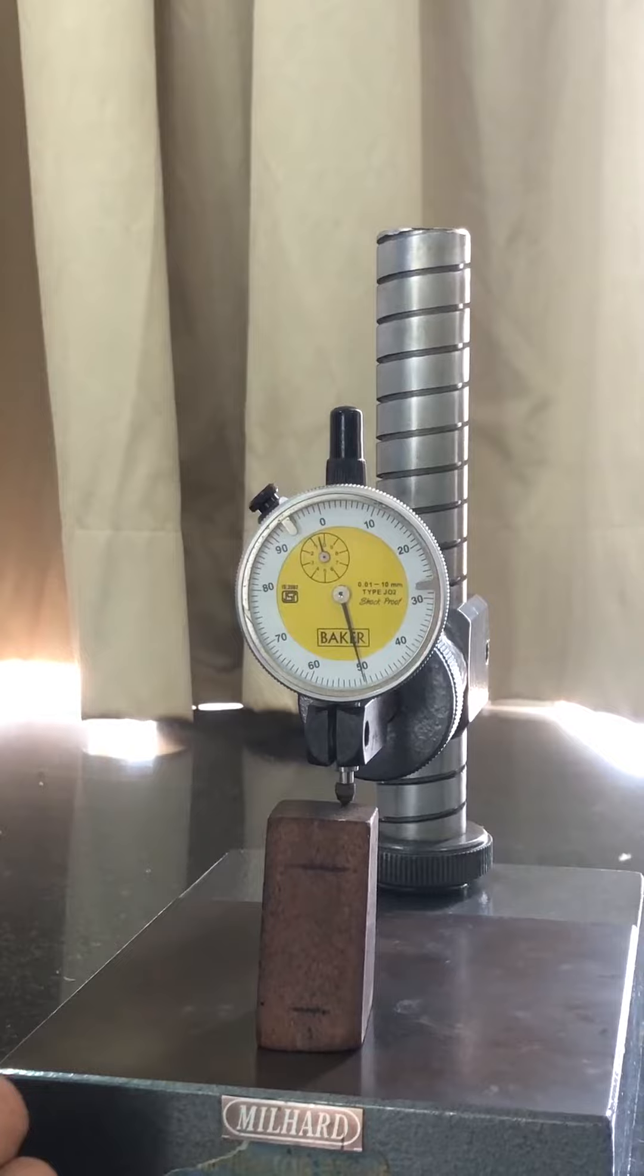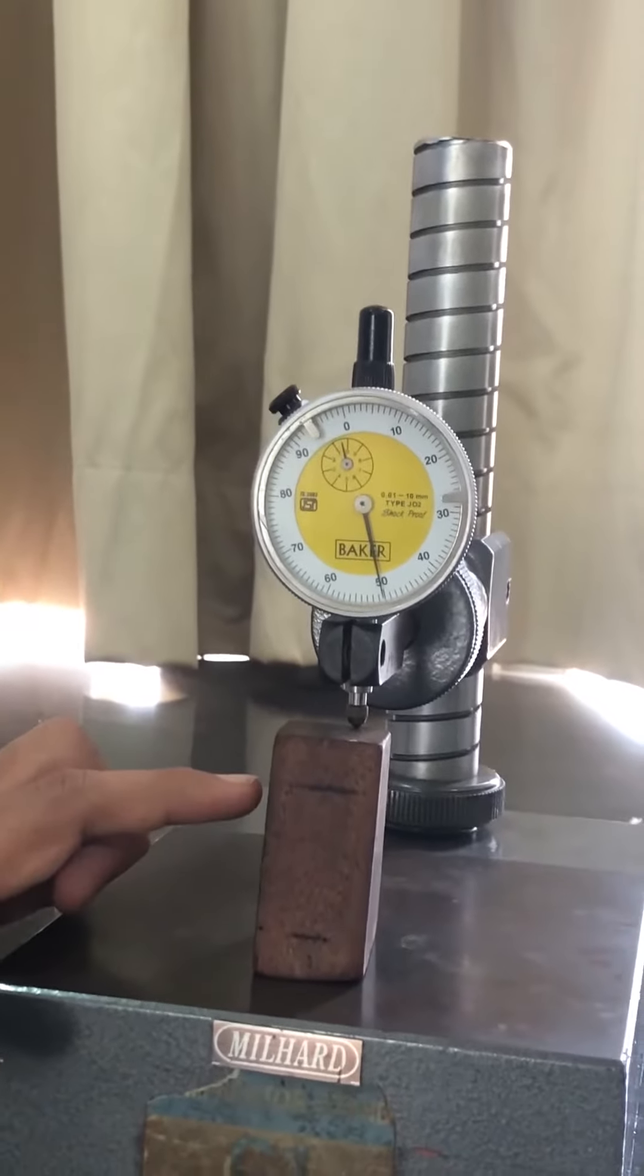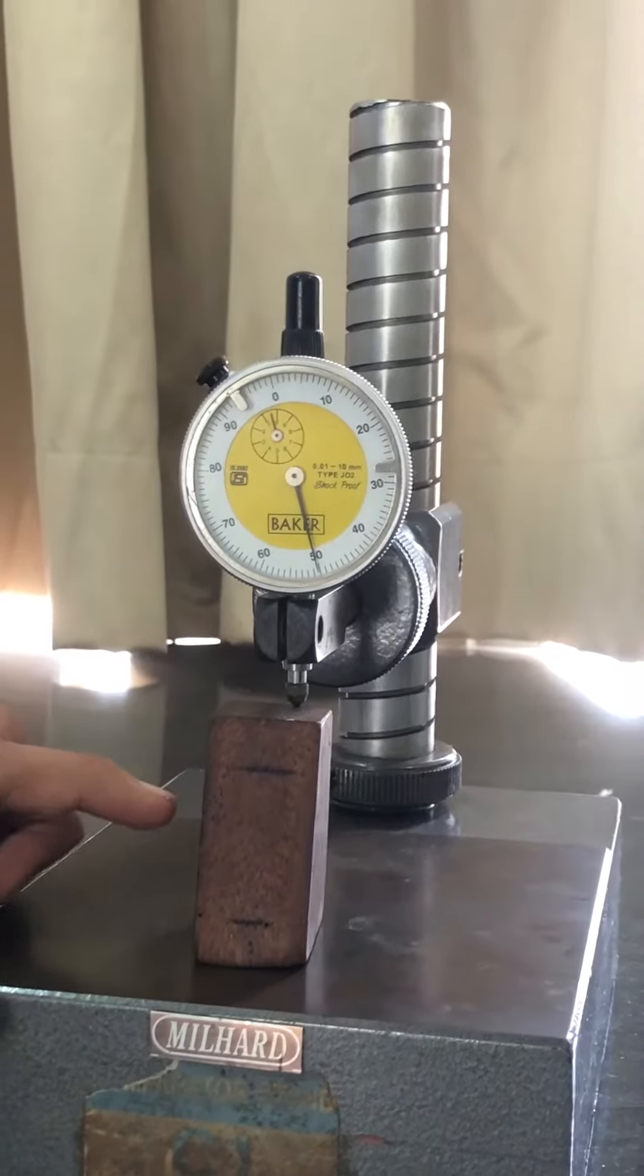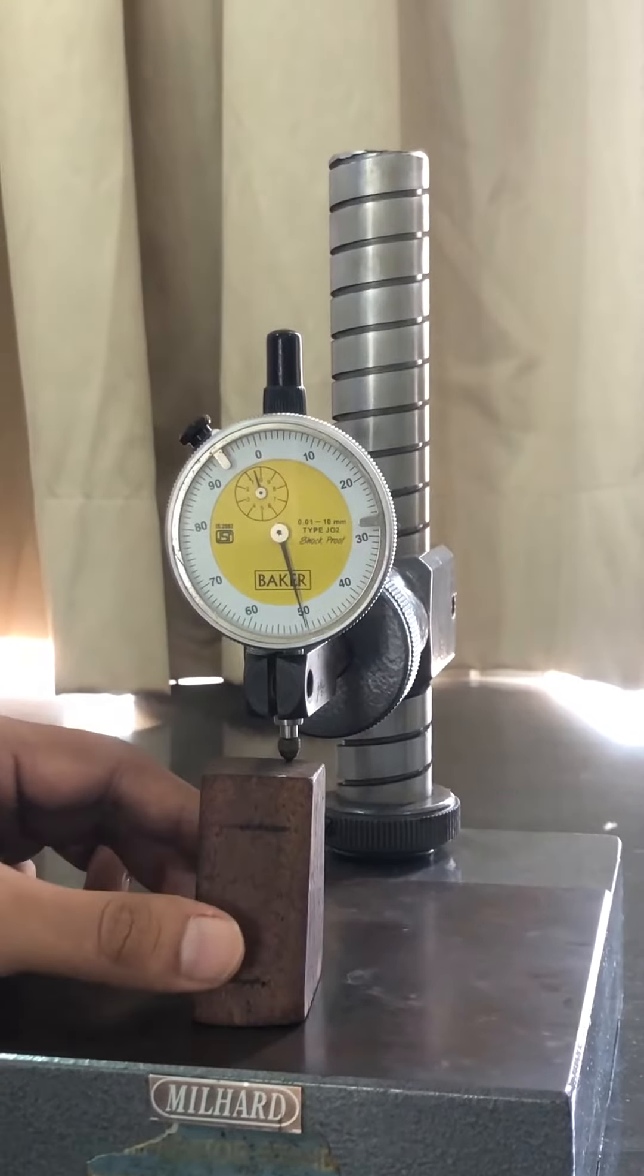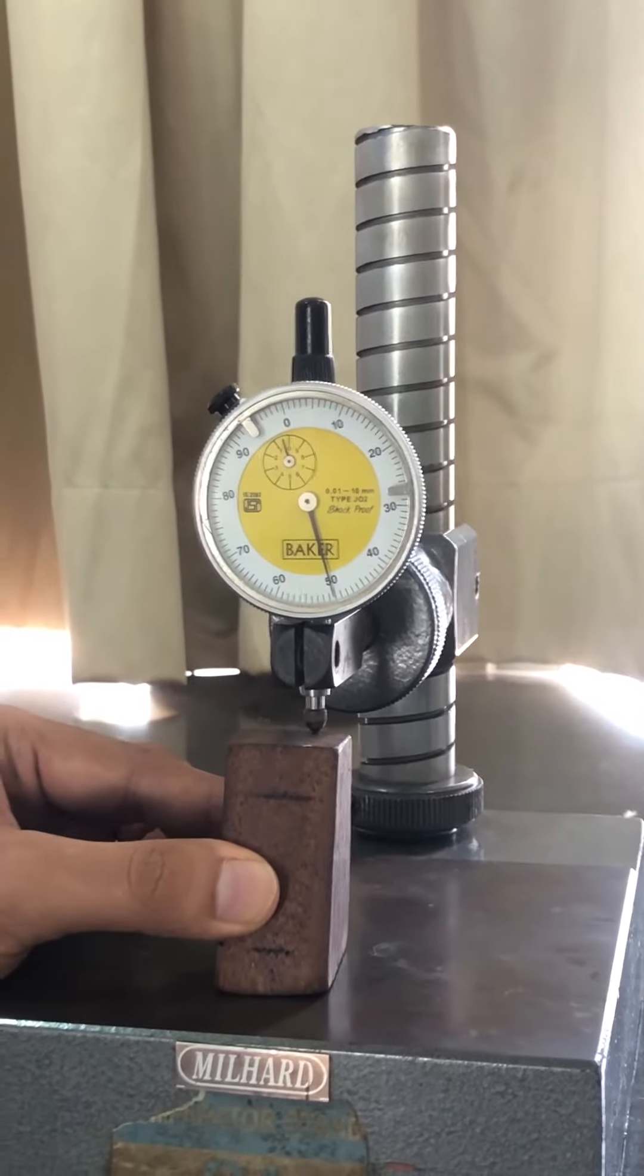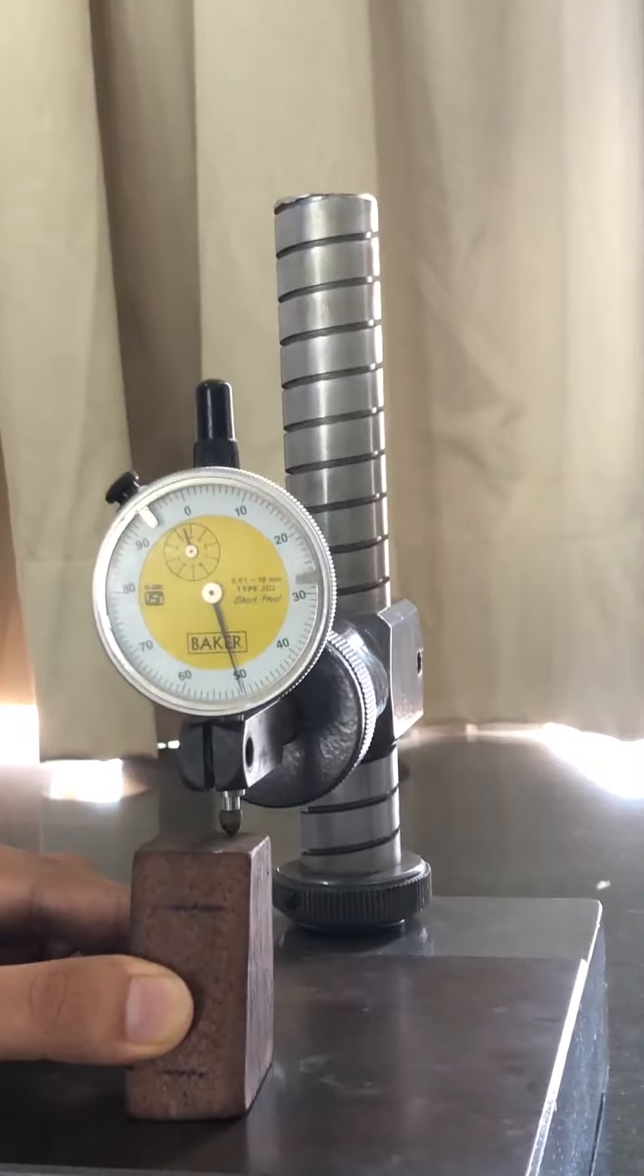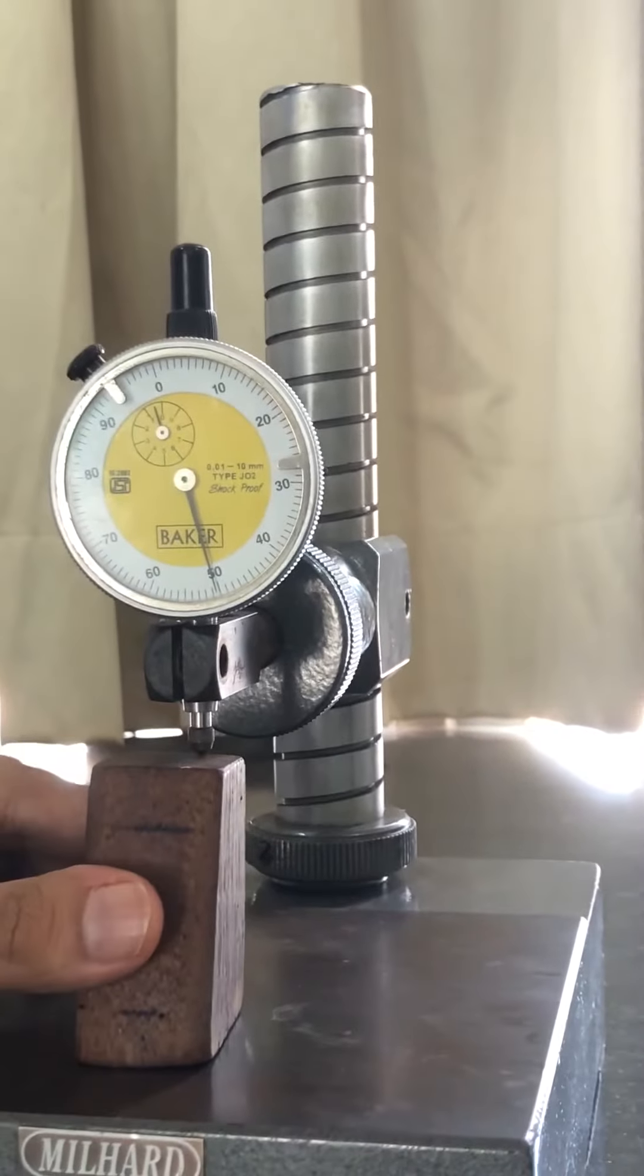To find the surface roughness of the component, this is the component which I have to measure. Initially, slide the workpiece across the dial and note down the deviations with respect to height.